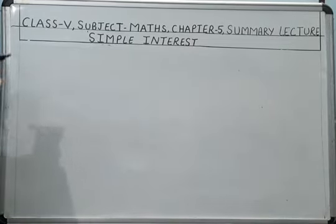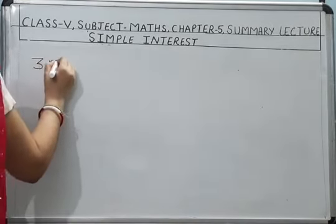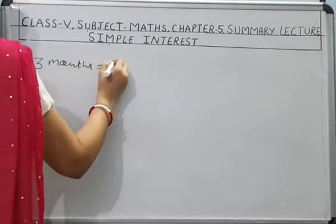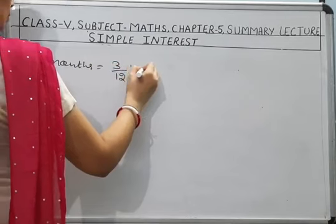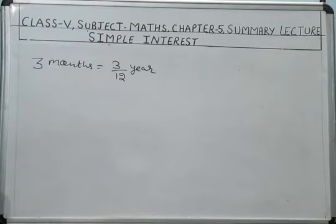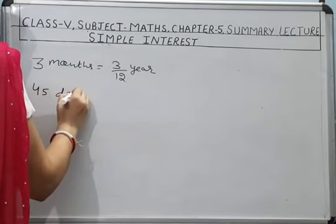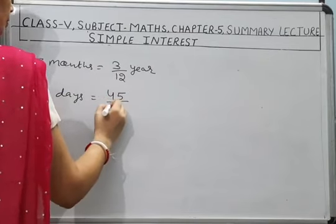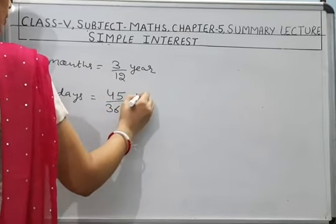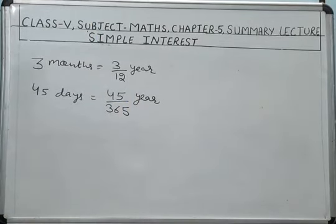Two important notes to remember: if time is given in months — suppose 3 months — then divide by 12 to convert it into years. If time is given in days — like 45 days — then divide by 365 to convert it into years. These two important facts you must keep in mind.